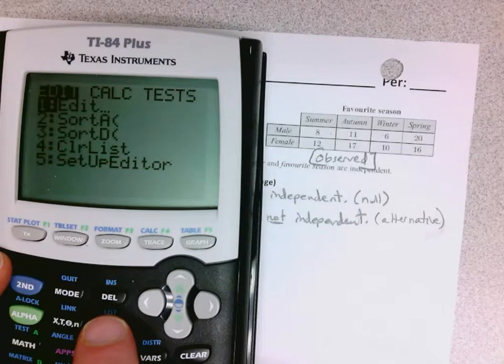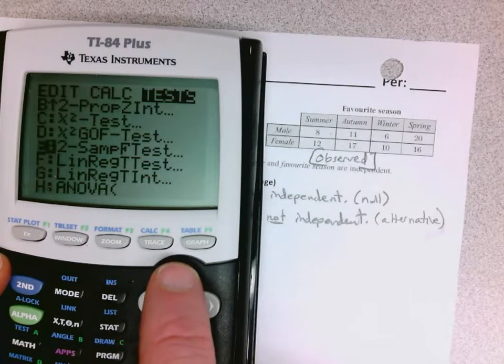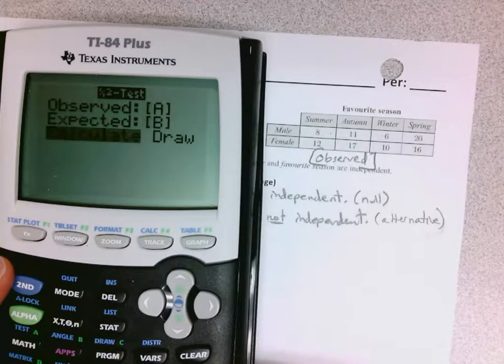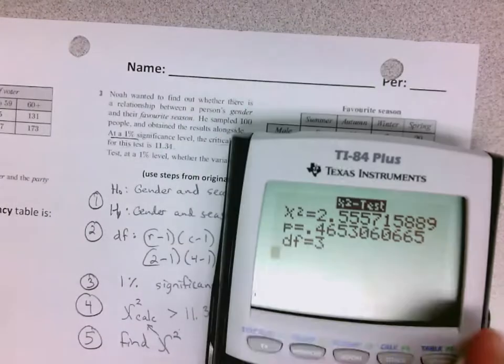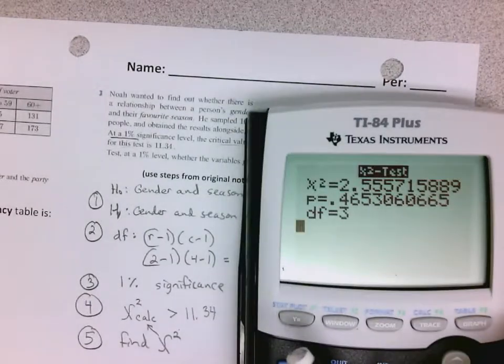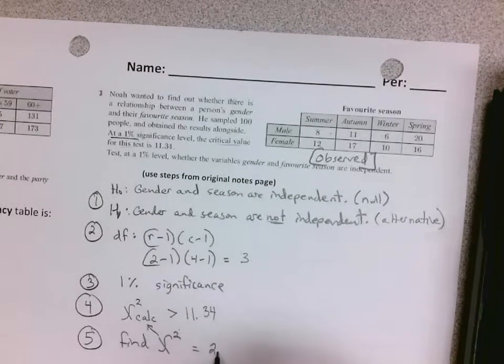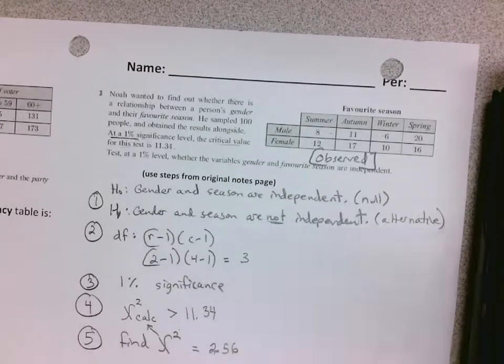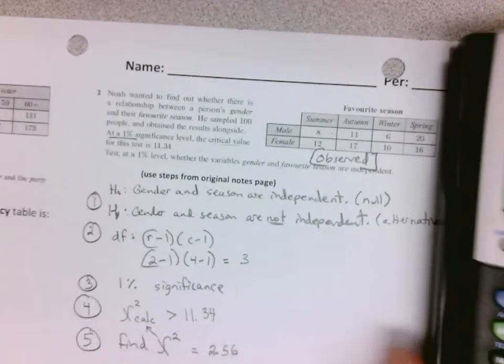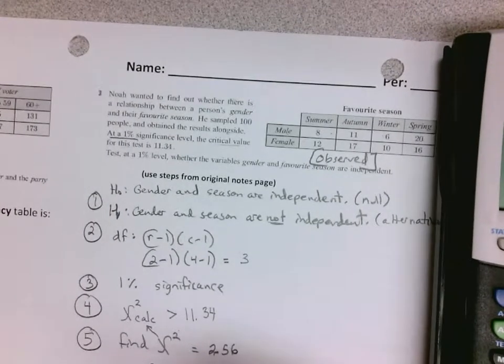Go back and do stat, test, chi squared test. Get my chi squared number. So my chi squared is 2.56 and the P value is .465.